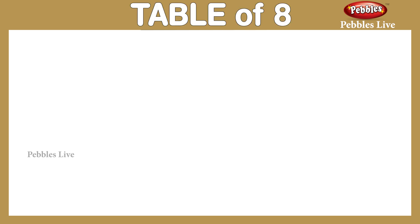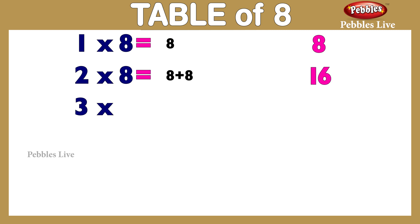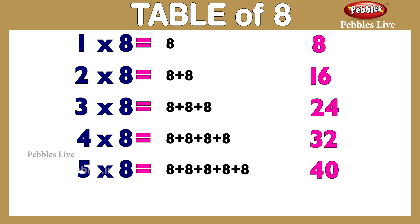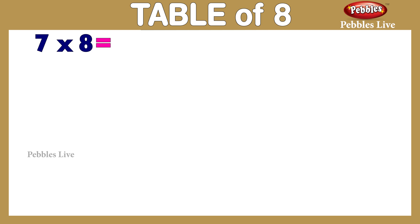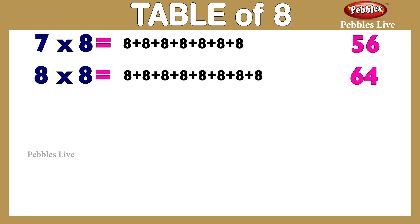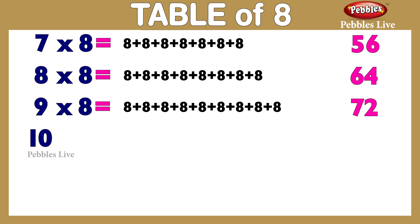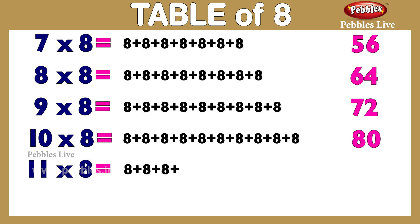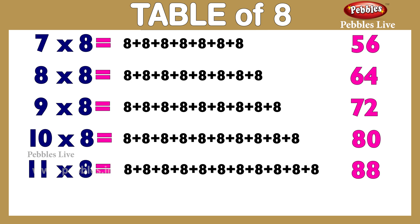Table of 8: 1 eight is 8, 2 eights are 16, 3 eights are 24, 4 eights are 32, 5 eights are 40, 6 eights are 48, 7 eights are 56, 8 eights are 64, 9 eights are 72, 10 eights are 80, 11 eights are 88, 12 eights are 96.